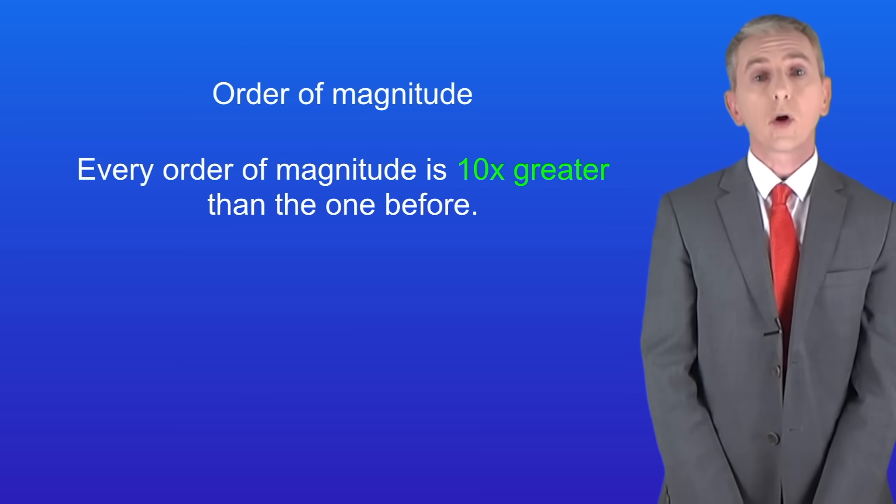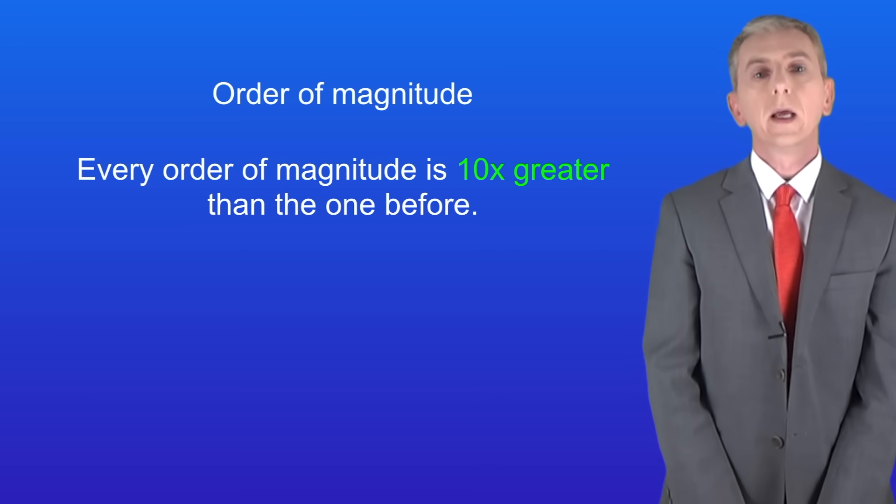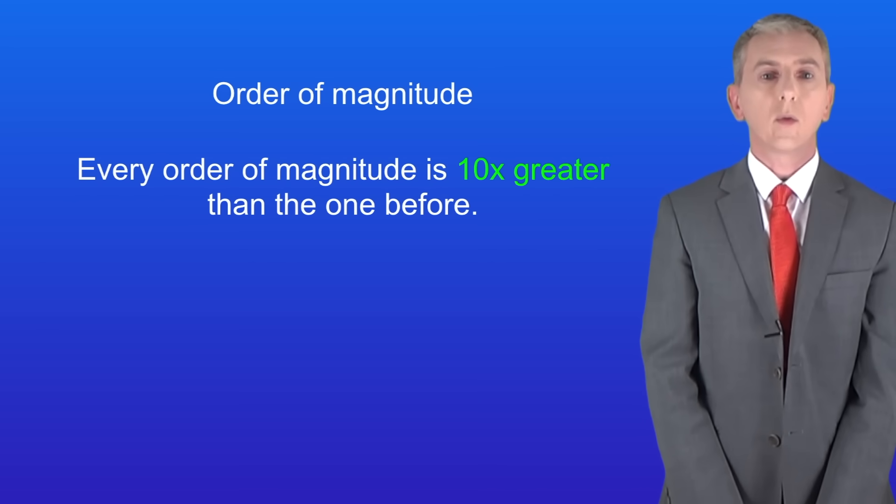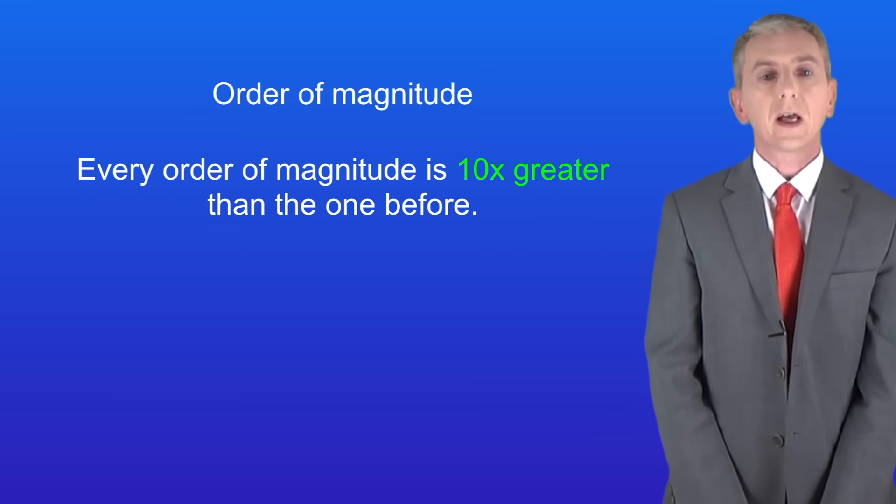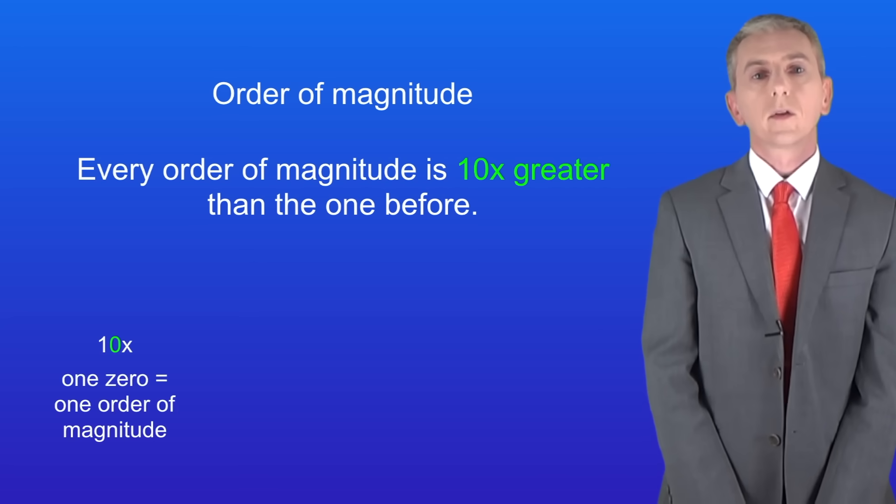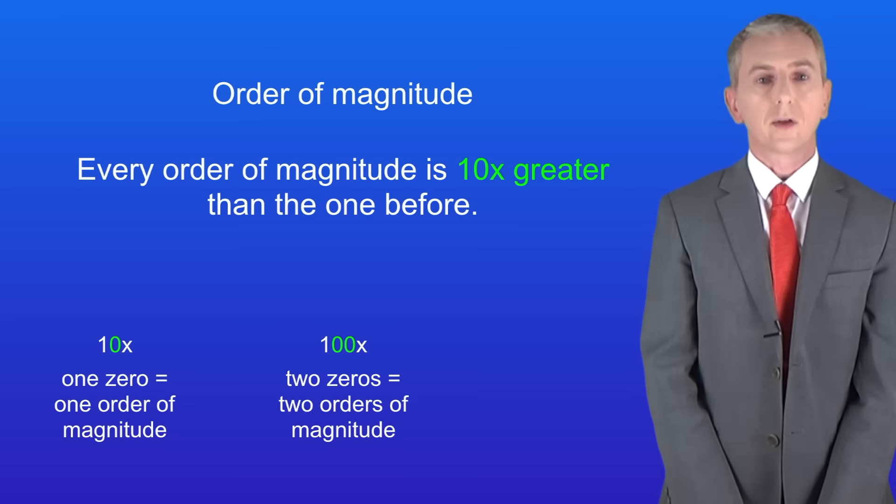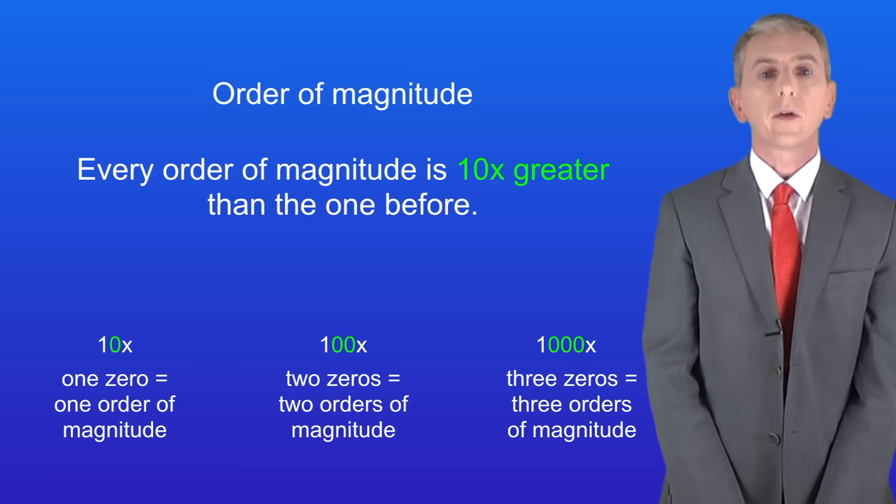The key idea is that every order of magnitude is 10 times greater than the one before. An easy way of working that out is to count the number of zeros. This tells you the order of magnitude. So 10 times is one order of magnitude, 100 times is two orders of magnitude, and 1000 times is three orders of magnitude.